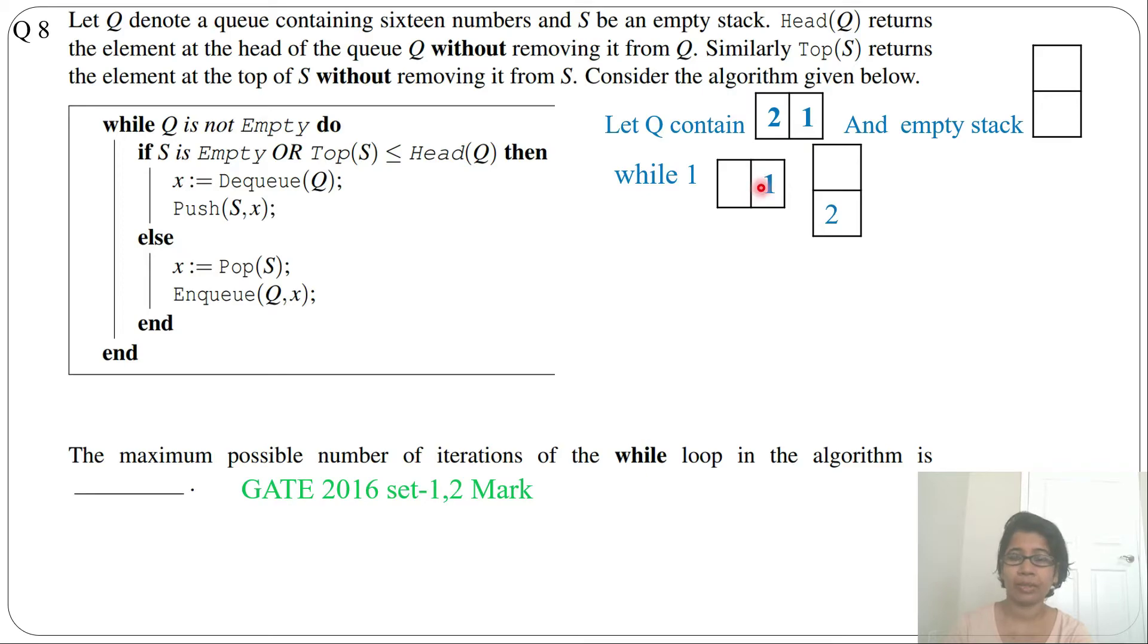So we'll pop S, so we'll pop from the stack, means we'll pop 2, and enqueue that value. And where will it enqueue? Enqueue always adds from the rear side. So now we'll enqueue 2 in the queue, so now 2 will be here because rear side is this. And stack is again empty.